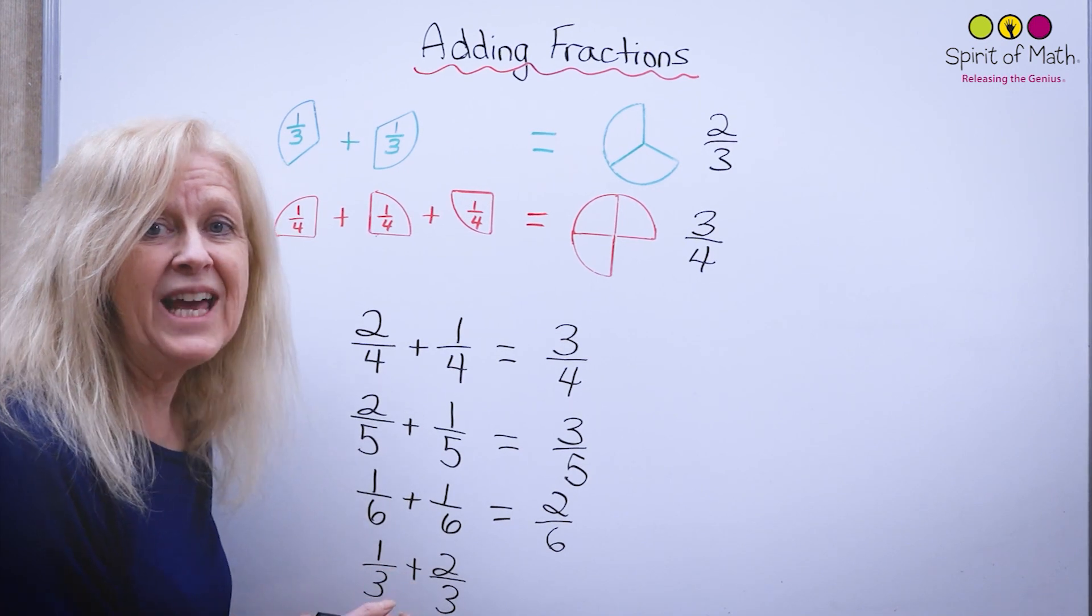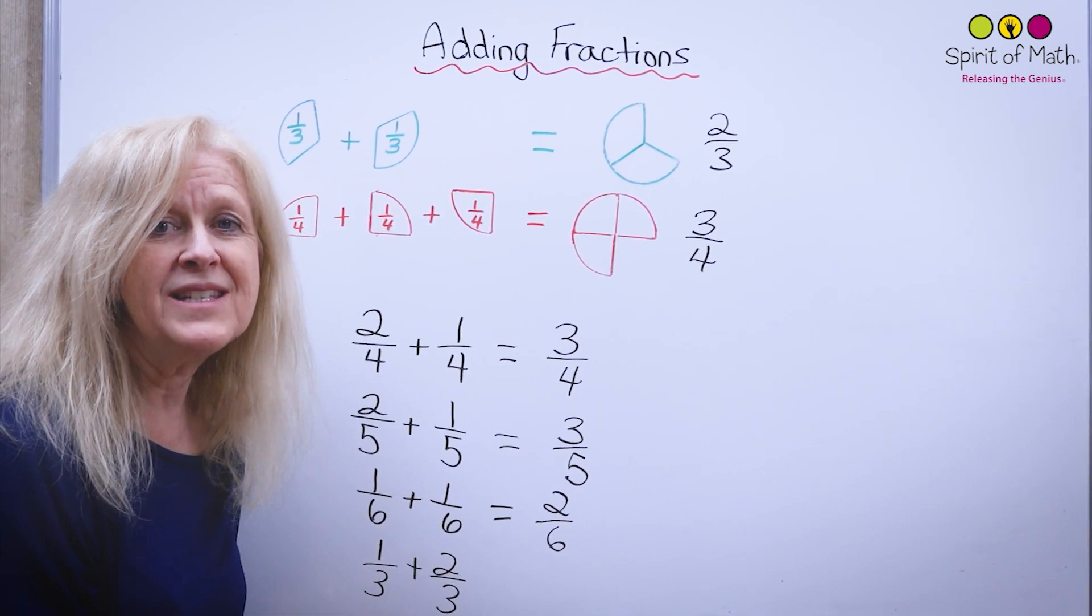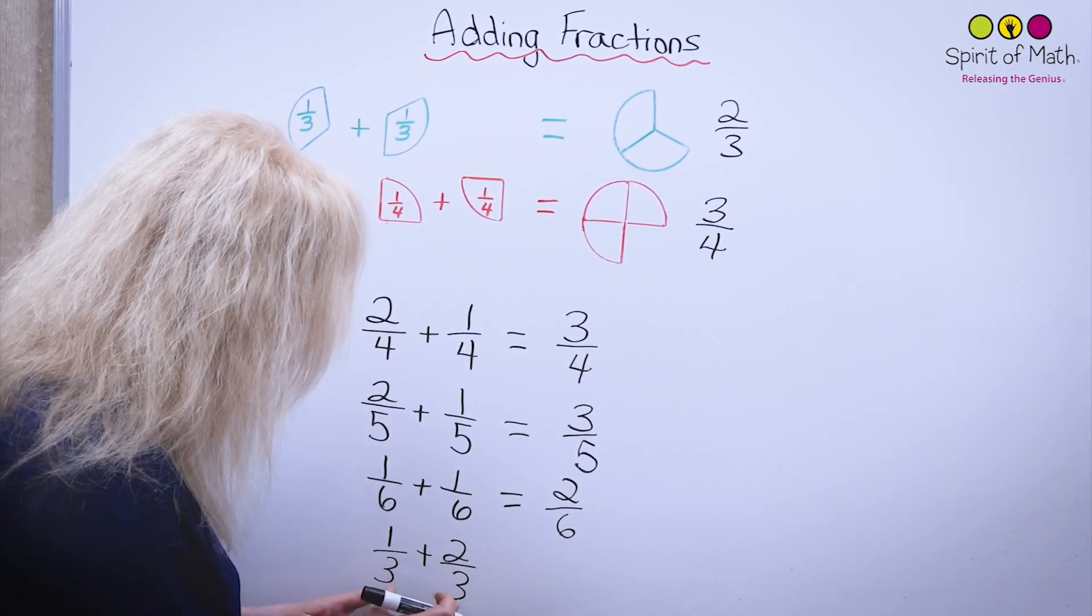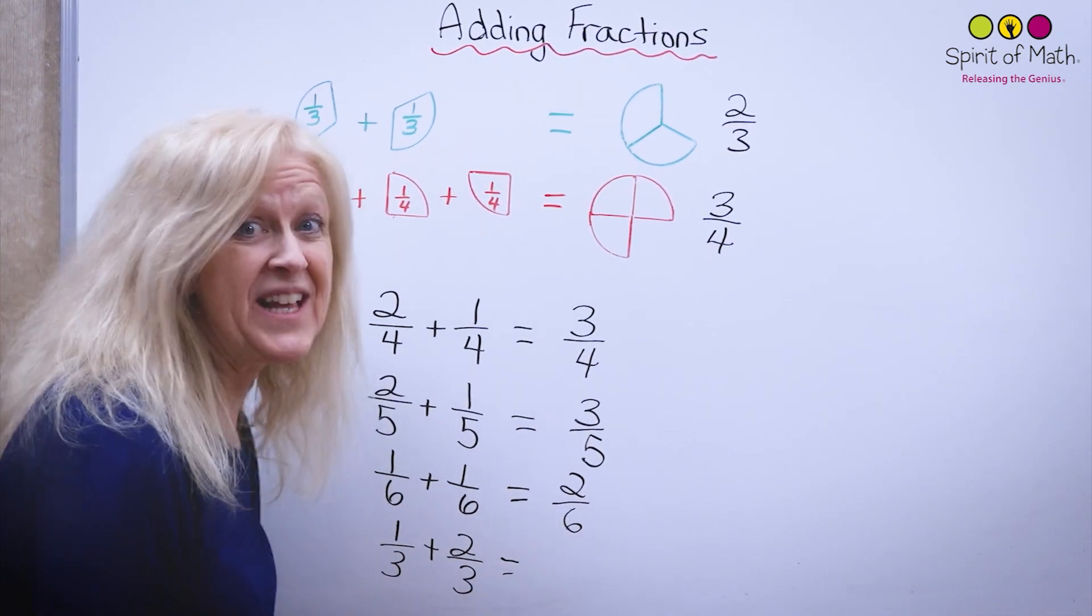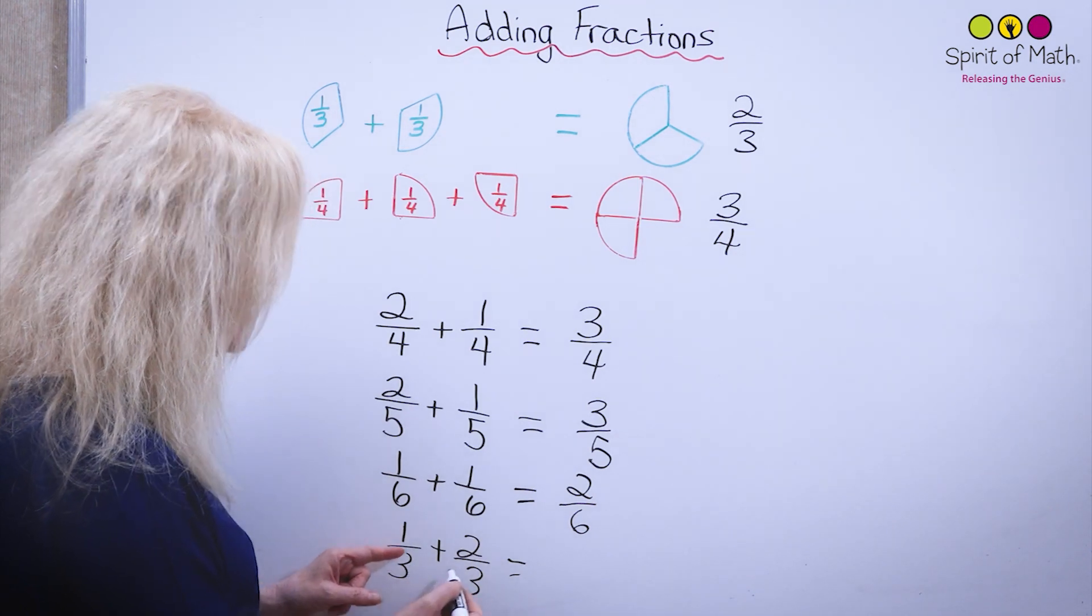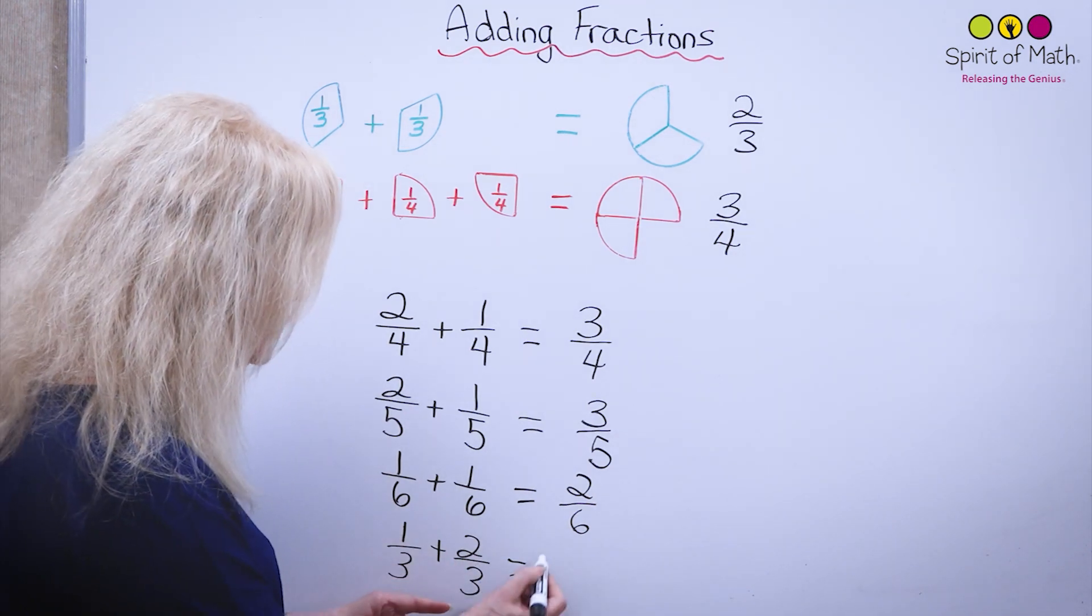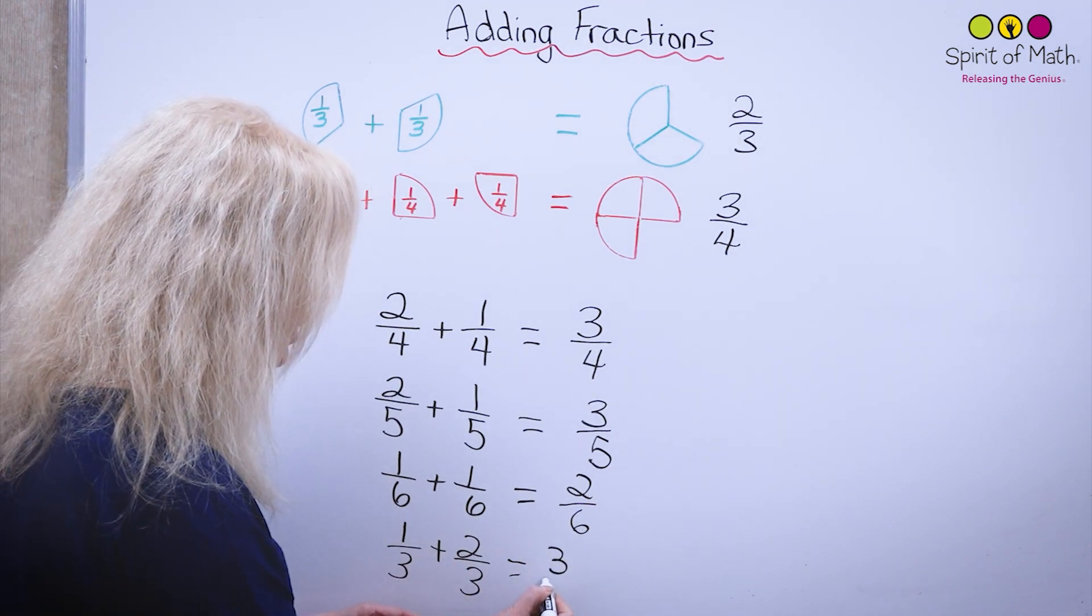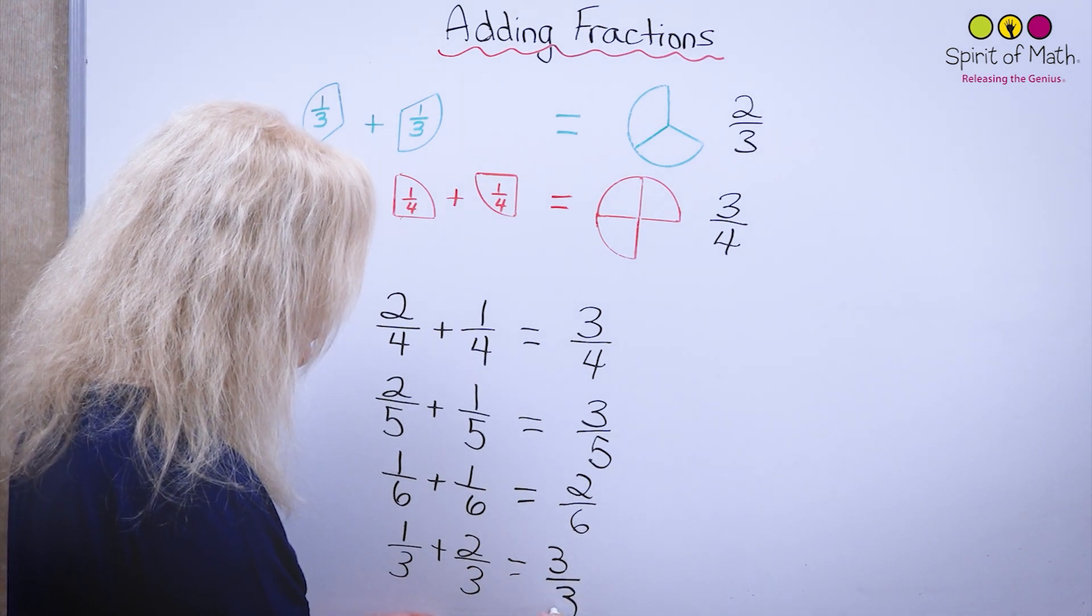Now this last one is kind of cool because you're going to see something kind of special that happens with this one. So you have one third plus another two thirds. That gives you a total of three thirds.